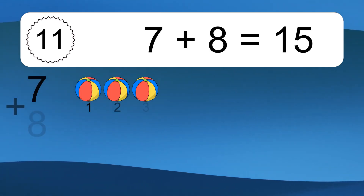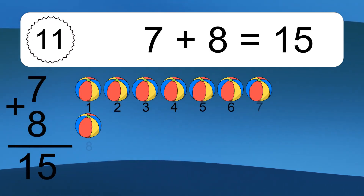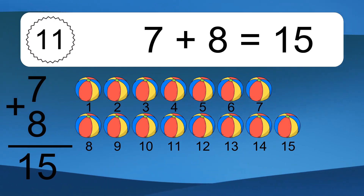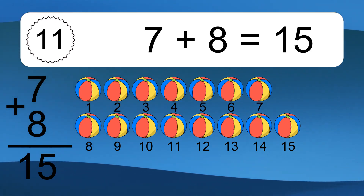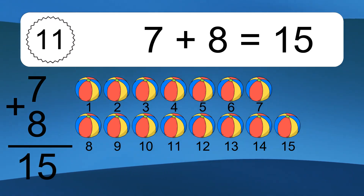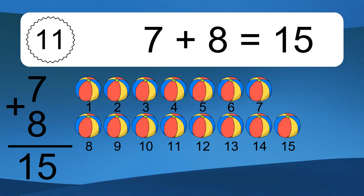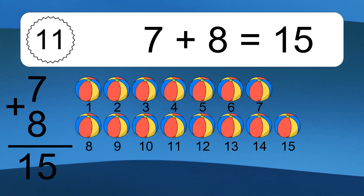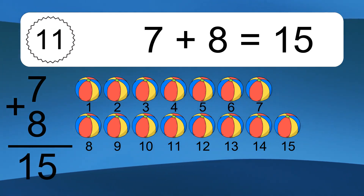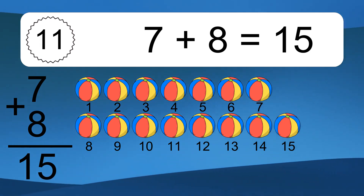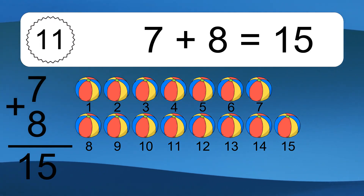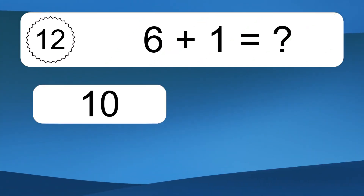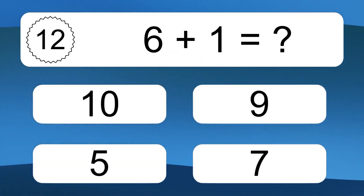7 plus 8 equals 15. Let's count it. 1, 2, 3, 4, 5, 6, 7, 8, 9, 10, 11, 12, 13, 14, 15. 6 plus 1 equals what?